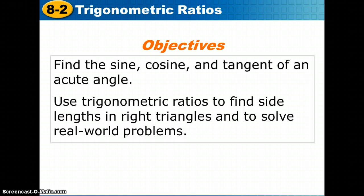Today our objectives include finding the sine, cosine, and tangent of an acute angle. We're going to explain what all those words mean — sine, cosine, and tangent — then use these three trigonometric ratios to find side lengths in right triangles and to solve real-world problems.